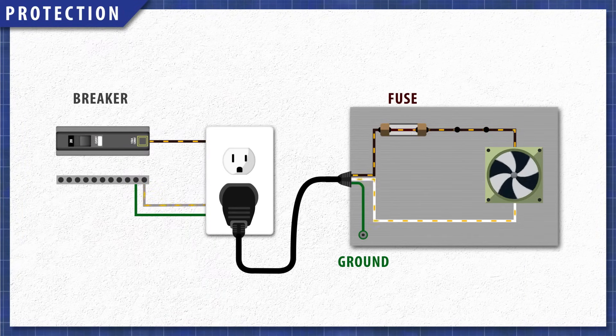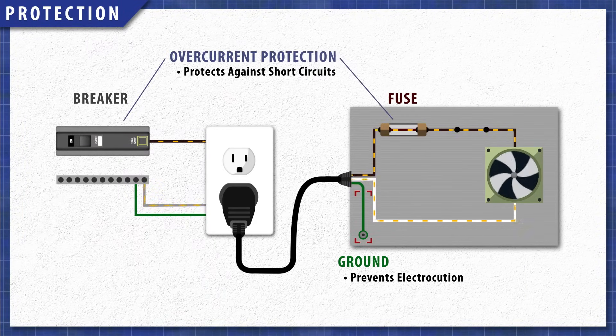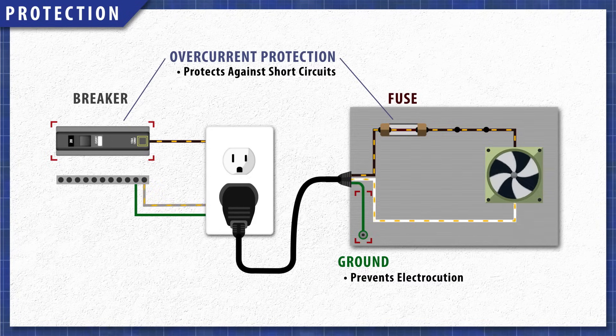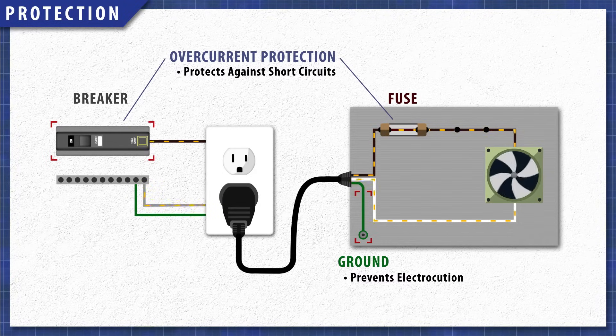All circuits need to be grounded and must have overcurrent protection to prevent electrical fires and electrocution. Your home's circuit breakers protect all downstream circuits and devices and will trip when the current gets too high. As well, some appliances will have one-time fuses rated for a maximum amperage. This will protect against short circuits.